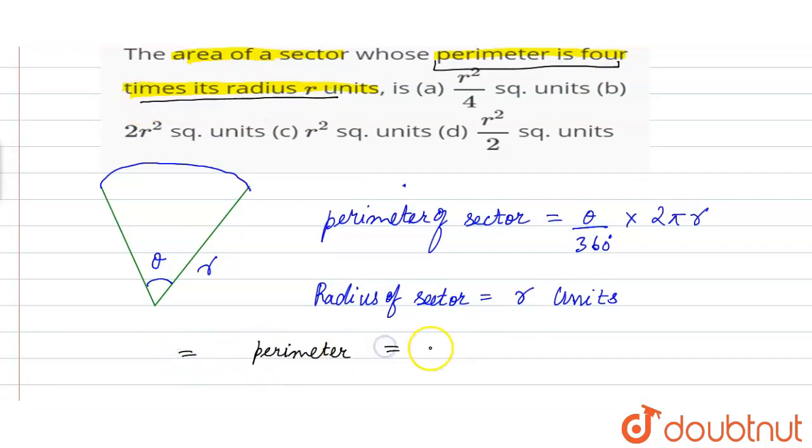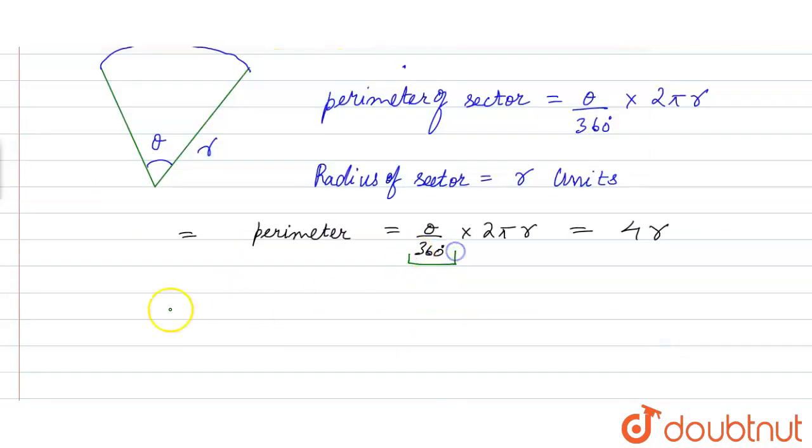From here the value of theta by 360 will be equal to—sending this 2πr to the right hand side we have 4r divided by 2πr.